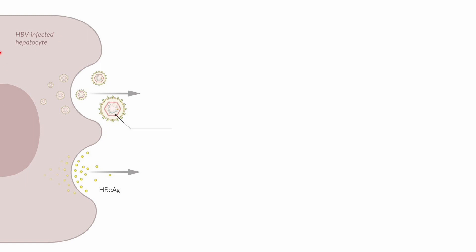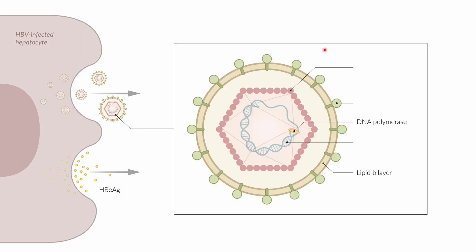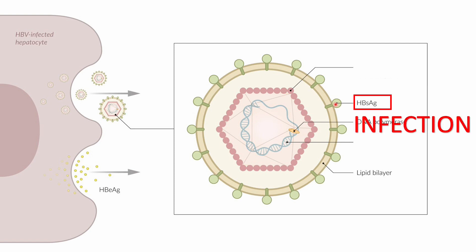Here is a hepatitis B infected liver cell releasing virions. The envelope antigen on the outermost layer is the hepatitis B surface antigen. If you have this in your blood, it means you are infected — whether acute or chronic — it means you currently have the virus in your blood.